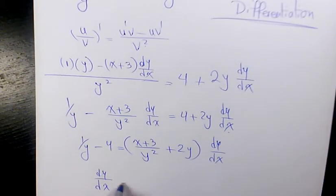So we have dy/dx equals (1/y - 4) divided by (x+3)/y^2 + 2y.